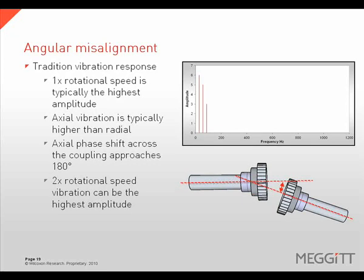Angular misalignment is characterized as having higher 1x rotational speed vibration, with the highest amplitudes often in the axial direction. The phase shift across the coupling should occur in the axial direction, and the analyst must consider the orientation of the transducer when collecting axial phase readings to obtain accurate measurements. While 1x is the most common response to angular misalignment, it is not uncommon to find 2x rotational speed vibration being the highest in amplitude, making it difficult to distinguish between offset and angular misalignment based on spectral data alone.